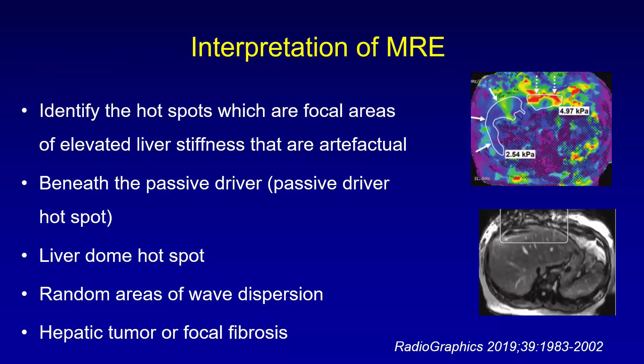It is important to be aware of pseudo values called hotspots — focal areas of elevated liver stiffness that are artifactual. One arises directly beneath where the passive driver is placed. There is the liver dome hotspot, random areas of wave dispersion, and if you have a hepatic tumor or focal fibrosis, you must identify that focal area and recognize it as an isolated hotspot when marking your total ROI.